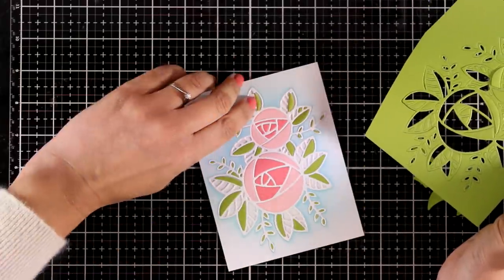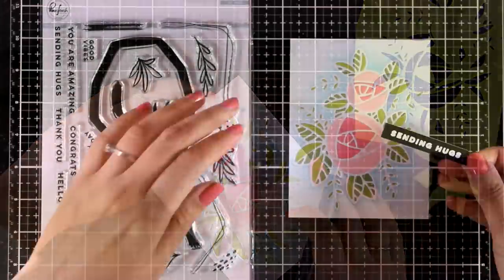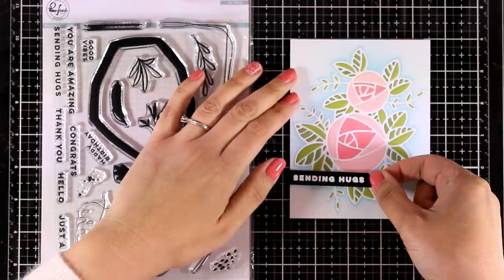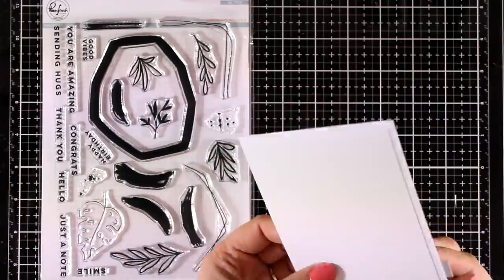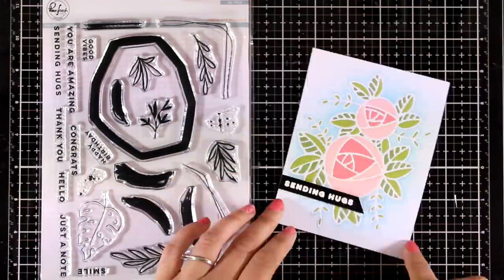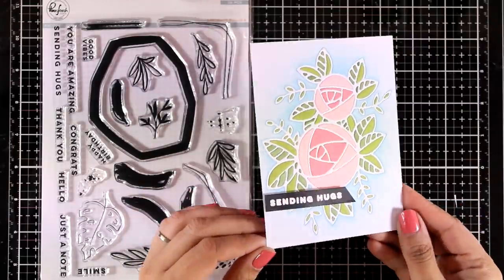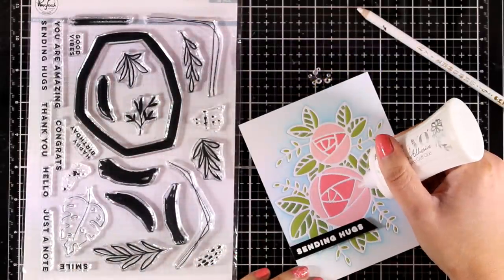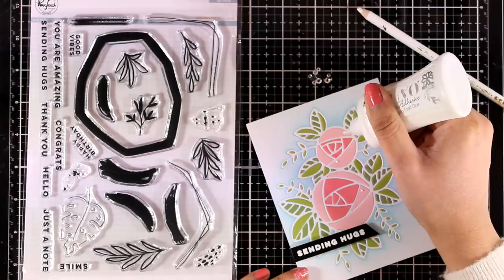So my light green is ready. I will move on to the darker shade of green now. And you can see that the image is ready to go. All I need to do is to add a sentiment. It says sending hugs, nice and bold. And it comes from the new stamp set which is called Abstract Builder. Just like always you will find everything you need linked down below.